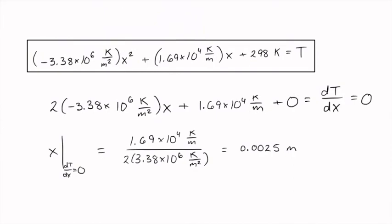Setting the temperature derivative equal to zero enables us to calculate either the maximum or the minimum. We can check that it's a maximum by looking at the curvature of the second derivative. It is a maximum. The x-coordinate at this maximum temperature position is 0.0025 meters, which is exactly halfway through the solar cell thickness.